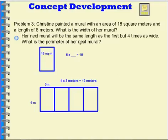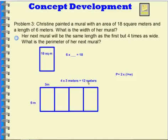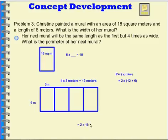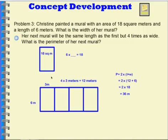But it wants to know what the perimeter is. We begin with the formula: perimeter is equal to 2 times length plus width. The length is 6 and the width is 12. So perimeter equals 2 times 12 plus 6. I can add 12 plus 6 and get 18. So the perimeter is equal to 2 times 18, and 2 times 18 is 36. So the perimeter of this mural is 36 meters.